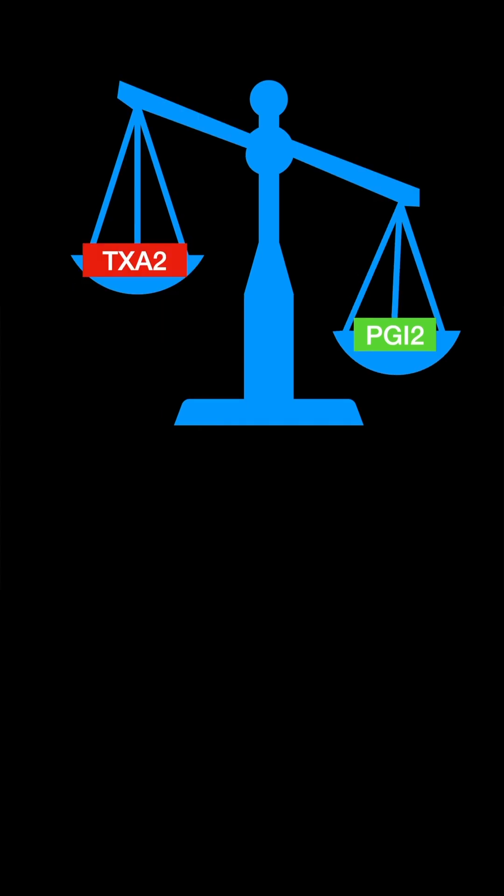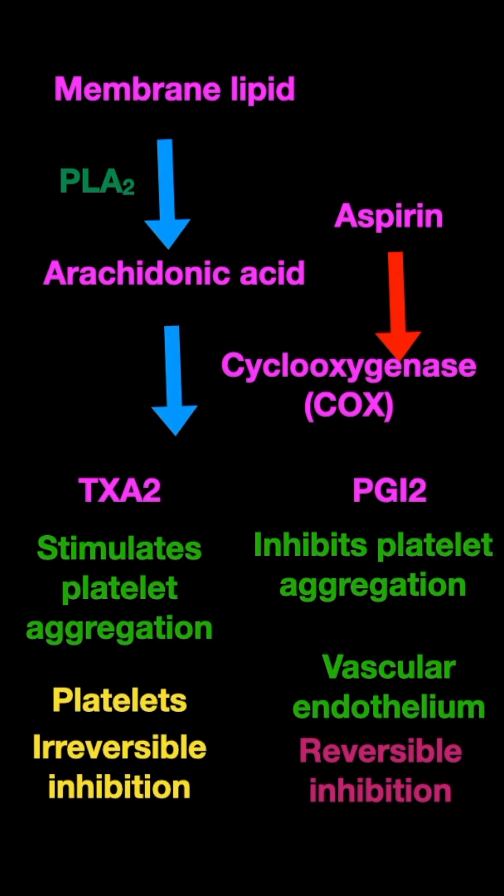So the balance shifts towards the synthesis of prostaglandin I2, which is the inhibitor of platelet aggregation. That is why aspirin acts as an inhibitor of platelet activation and platelet aggregation — decreasing the tendency for thrombus formation. When there is decreased tendency of thrombus formation, blood vessels are not going to be blocked, and that is why it is used for the prevention of stroke and myocardial infarction.